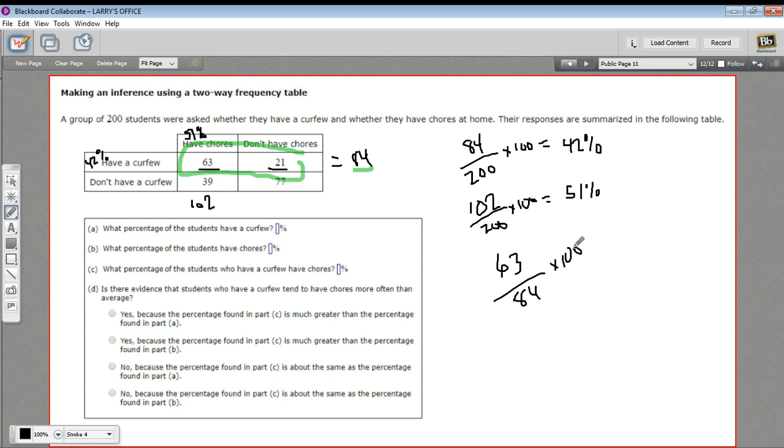So that's going to be 63 out of 84, and then we multiply that by 100. So grabbing my calculator, 63 divided by 84 times 100, and we get 75%. That's a bigger percentage. So what it looks like to me is that if you have a curfew, you're much more likely to have chores. And I guess that makes sense. If you have the type of parent who's going to give you a curfew, you might also have the type of parent who's going to ask you to do chores.